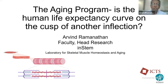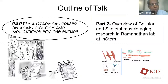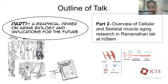My lab works on aging in the broadest sense. I'm very fond of skeletal muscle, and skeletal muscle loss is a major paradigm by which we're trying to study muscle mass. The first part of the talk is a graphical primer on aging biology, based on a book I'm writing — a nice opportunity to show some artwork. The second part covers what my lab does at INSTEM in terms of skeletal muscle homeostasis.